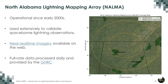NASA's oldest LMA network is the North Alabama Lightning Mapping Array, based in Huntsville and operational since the early 2000s. Its primary purpose is validating spaceborne lightning observations. Real-time imagery is available on the web, and daily full-rate processed data is provided through GHRC. It covers much of northern Alabama and extends into Tennessee, Georgia, and Mississippi. The other permanent NASA networks are the District of Columbia and Wallops Flight Facility LMAs, located near Washington D.C. and the Delmarva Peninsula respectively — with work ongoing to combine them into a mid-Atlantic LMA.